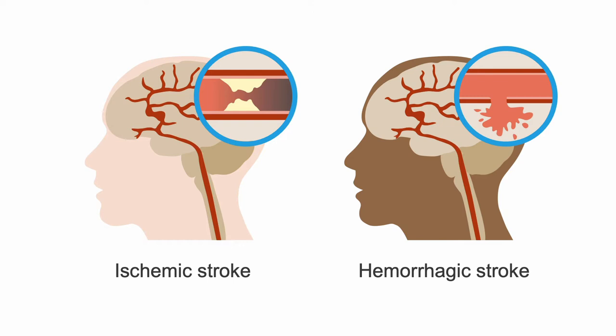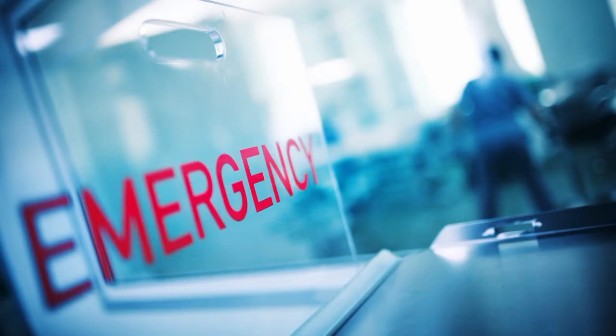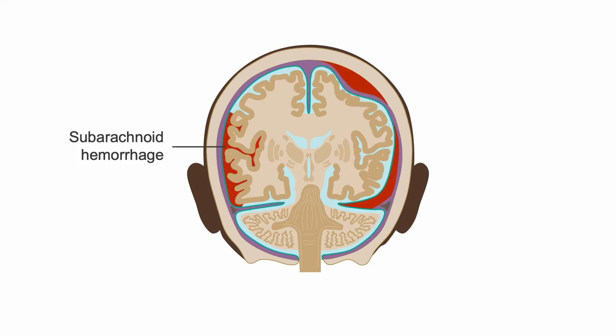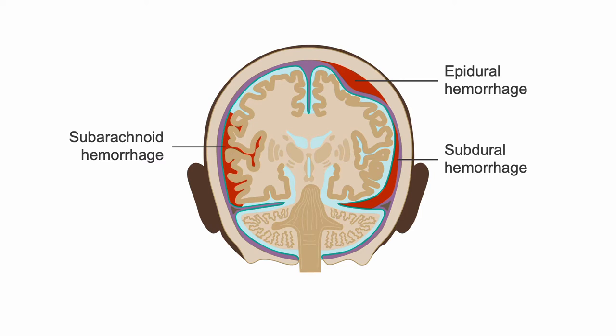There are actually a wide variety of pathological entities that can lead to a spontaneous intracranial hemorrhage or hemorrhagic stroke. Many lead to emergent intervention, so let's discuss them and their emergent management. Spontaneous intracranial hemorrhages can occur within the brain, called an intracerebral hemorrhage or an intraparenchymal hemorrhage, or between the brain and the skull, called a subarachnoid hemorrhage, subdural hemorrhage, or epidural hemorrhage.